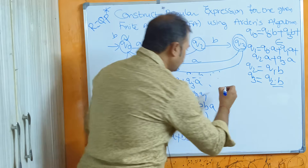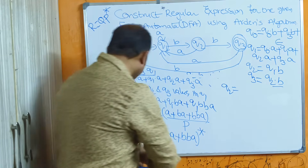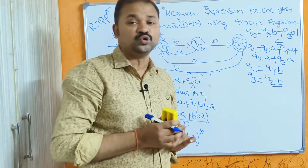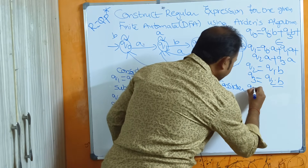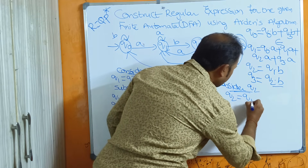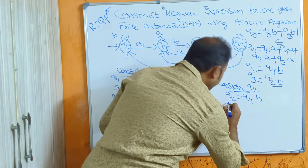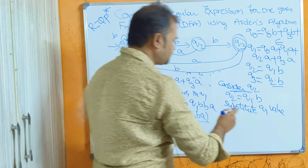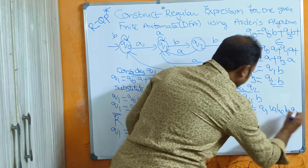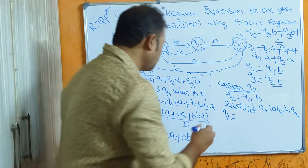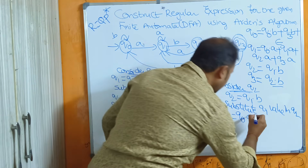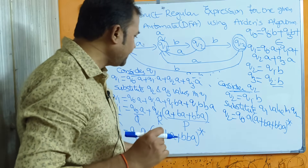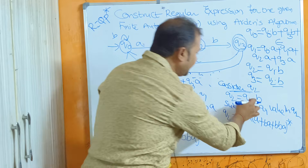Next, obtain the q2 value. q2 = q1·b. We already have q1, so substitute q1 into q2: q2 = q0·a · (a + ba + bba)* · b.